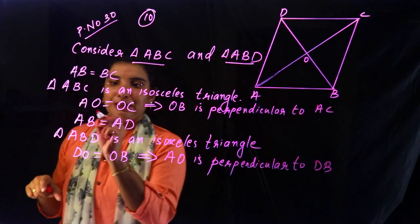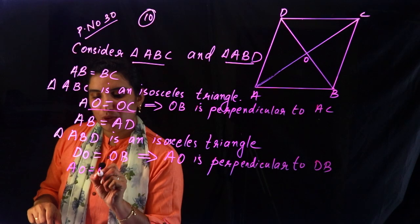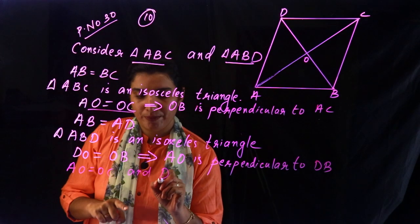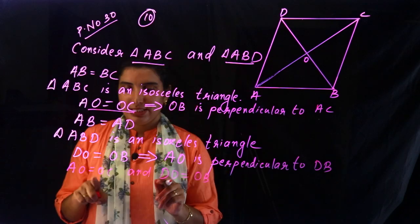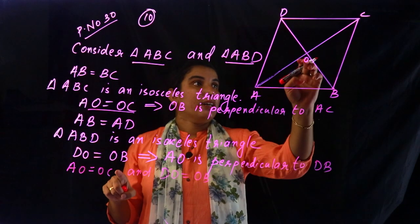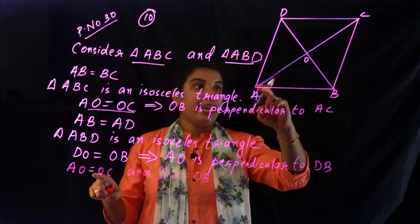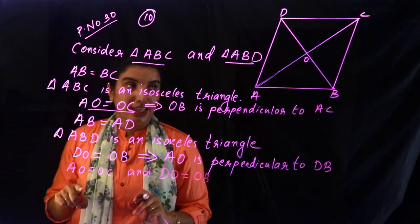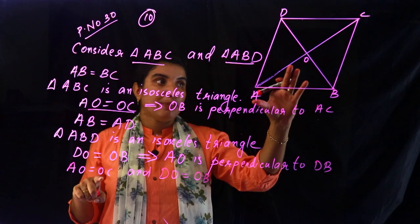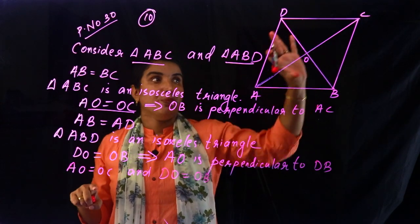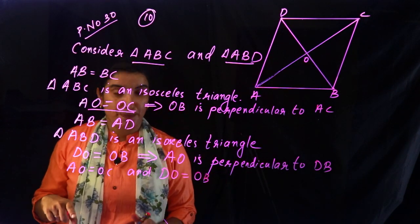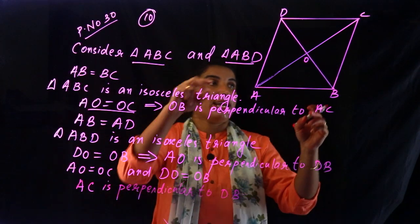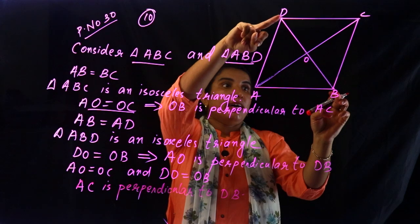So we have: AO equal to OC and DO equal to OB. That means AC is perpendicular to BD.